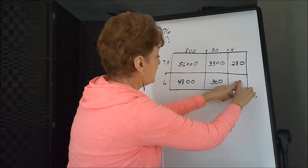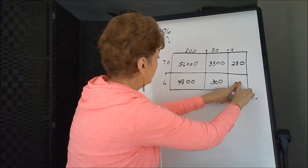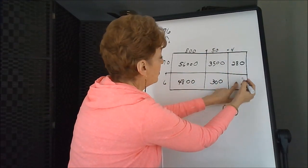And on the very last box, there are no zeros at all on those two numbers. So we'll just multiply 6 times 4 is 24.